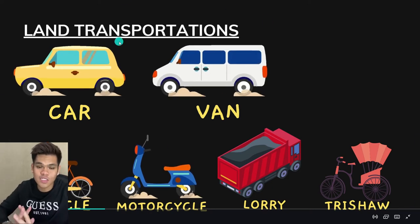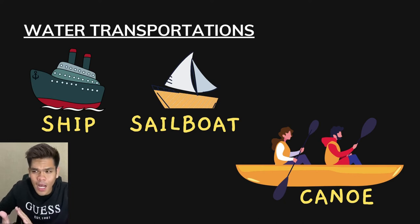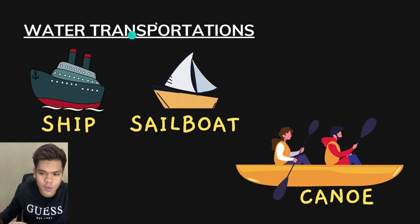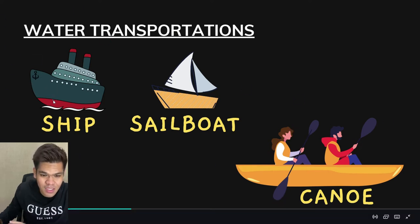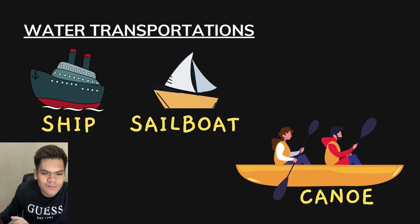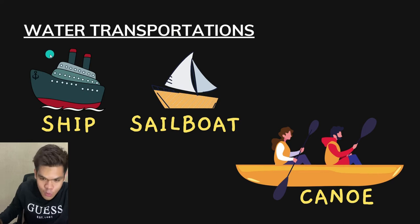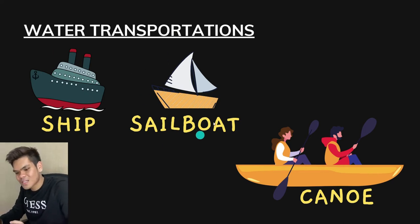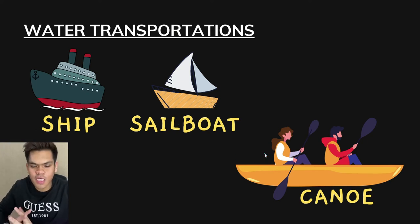Next, we are going to look at water transportation. I am sure there are many types of water transportation, but I have three examples for you. The first one is a ship — it's a big transport that you can see in the middle of the sea, or you can see it on TV, like the Titanic. Then we have a sailboat, and the last one is a canoe. These three are examples of water transportation — pengangkutan air.